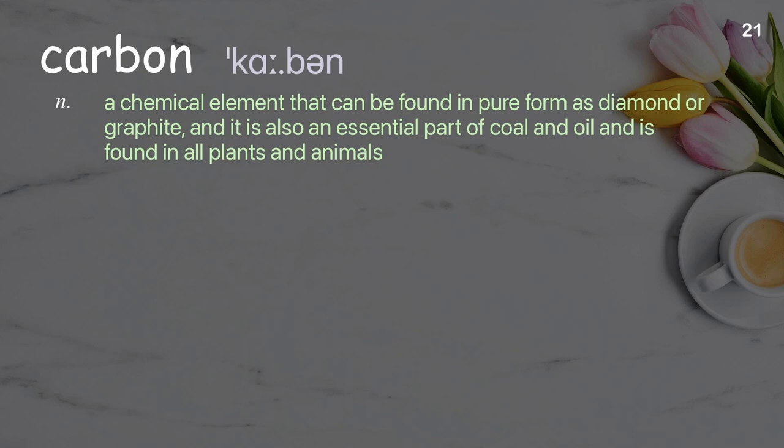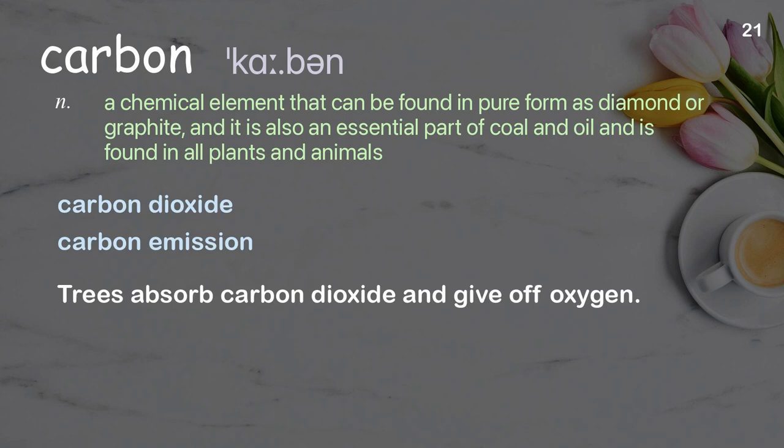Carbon: a chemical element that can be found in pure form as diamond or graphite, and it is also an essential part of coal and oil, and is found in all plants and animals. Examples: carbon dioxide; carbon emission. Trees absorb carbon dioxide and give off oxygen.